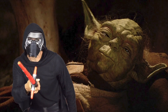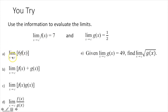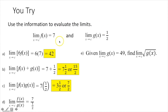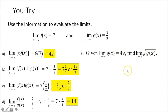You try. The scalar multiple rule: the limit as x approaches c of 6·f(x) equals 6 times 7, which is 42, since the limit of f(x) is 7. The limit of f(x) + g(x): add the two limits to get 15/2. The limit of f(x)·g(x): multiply the two limits to get 7/2. The limit of f(x)/g(x): divide the two limits to get 14. Lastly, given the limit of g(x) equals 49, the limit of √g(x) equals √49, which is 7.